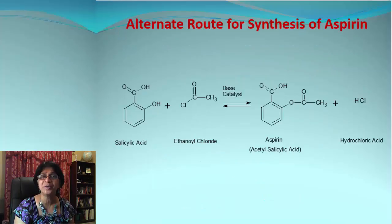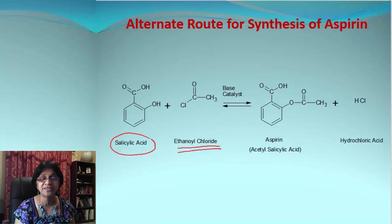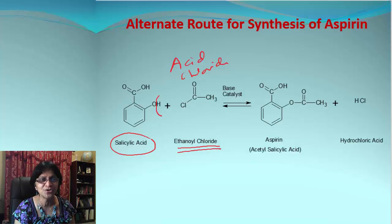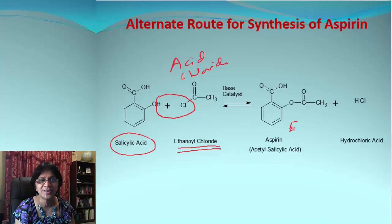Soon aspirin was getting very popular and scientists came up with alternate routes for its synthesis. One method still popular today uses salicylic acid treated with ethanoyl chloride, which is an acid chloride. The OH group's hydrogen is dissociated, HCl is removed, and we directly get the same ester formation — which is nothing but aspirin.